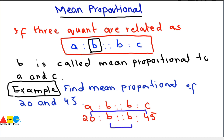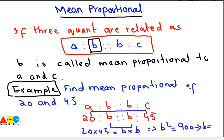So we write it as 20 multiplied by 45 equals B multiplied by B. That means B squared equals 900. Taking the square root on both sides, B equals plus or minus 30. So the value of B comes out as plus or minus 30. This is how you can find the mean proportional by first writing it in its standard form and then solving it just like a proportion.